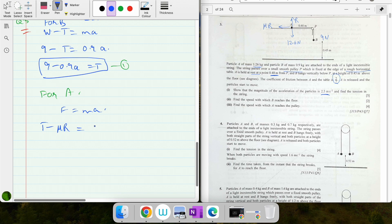Fill in the values: T minus mu R equals ma. T minus (2/7)R, where R equals 12.6 as can be seen from the diagram - only two vertical forces. Mass is 1.26 of A.